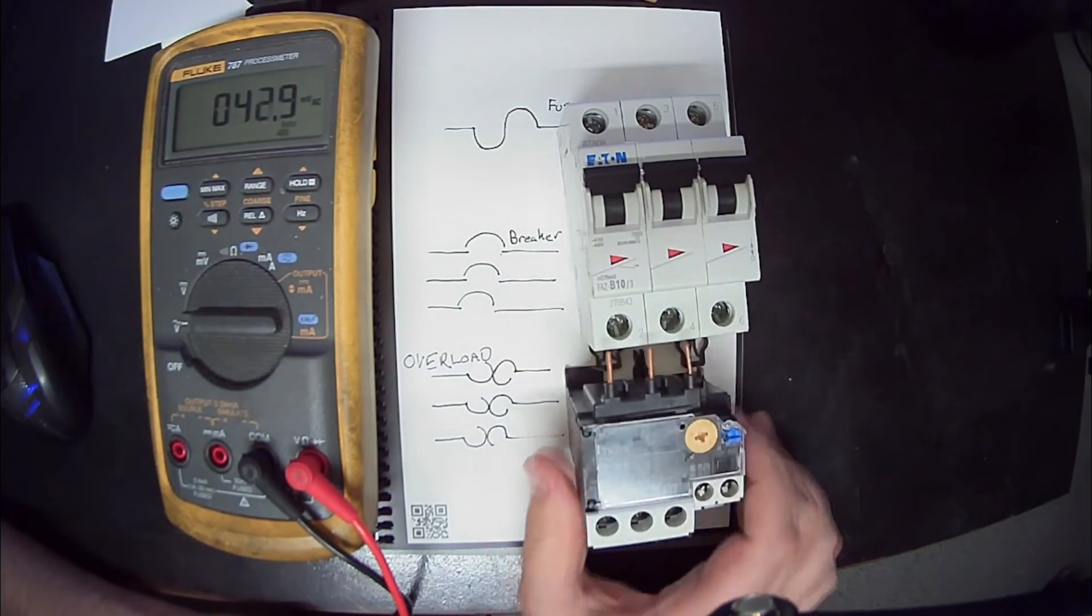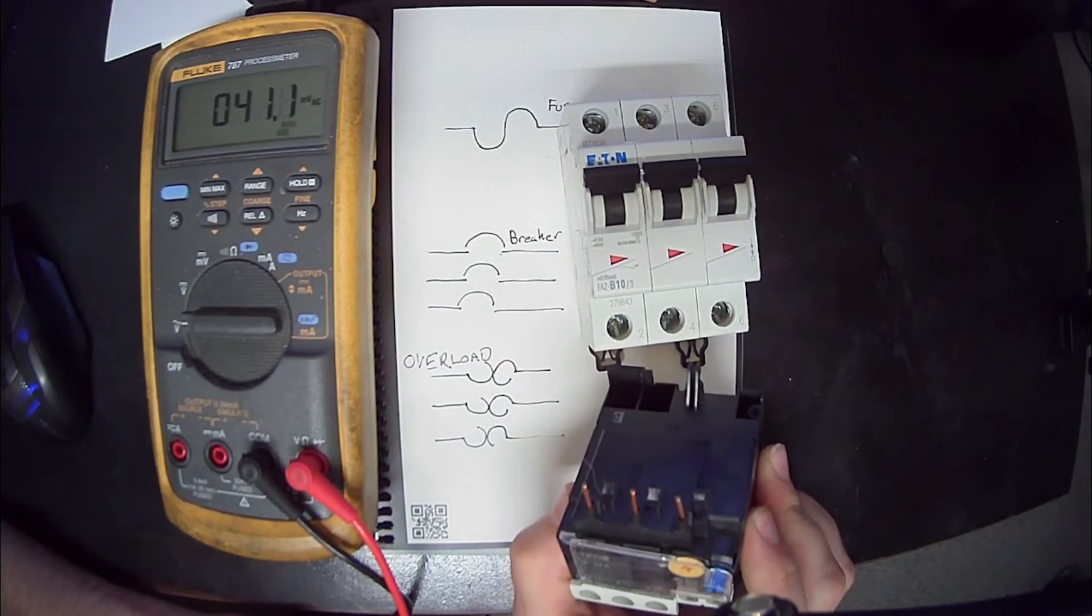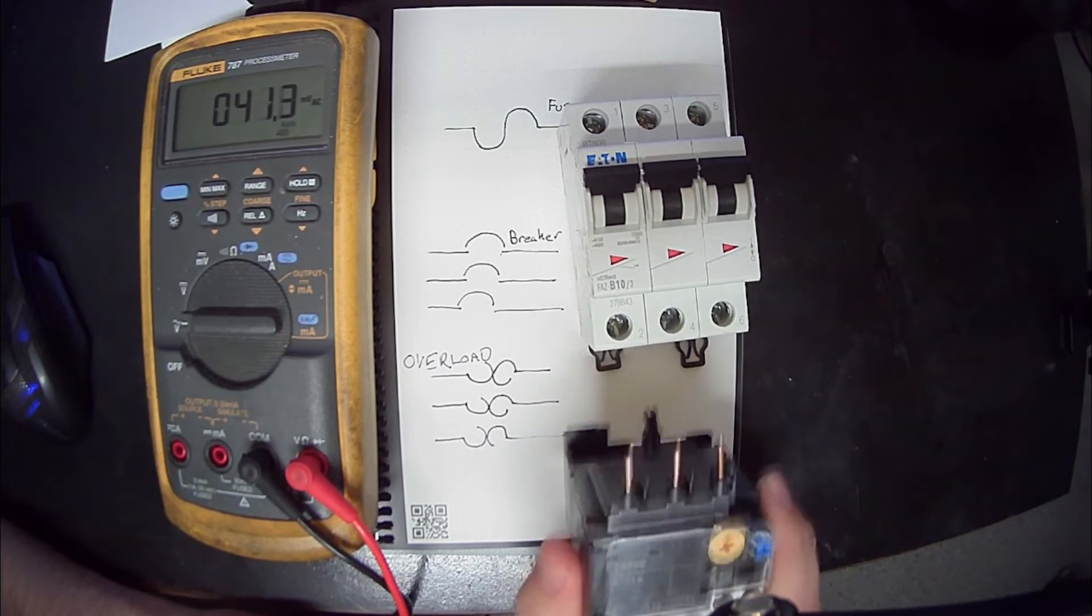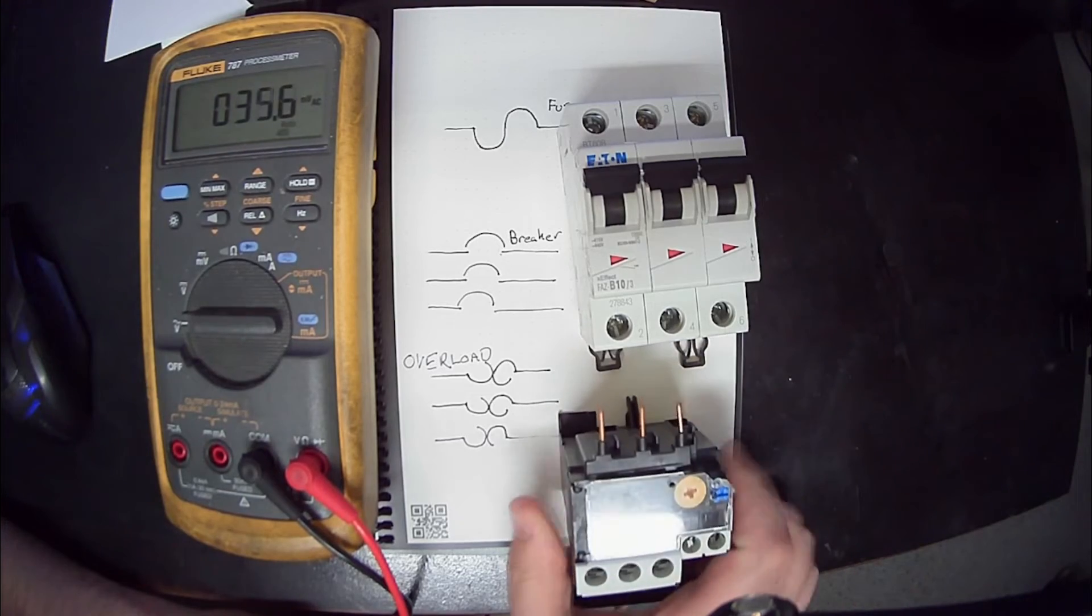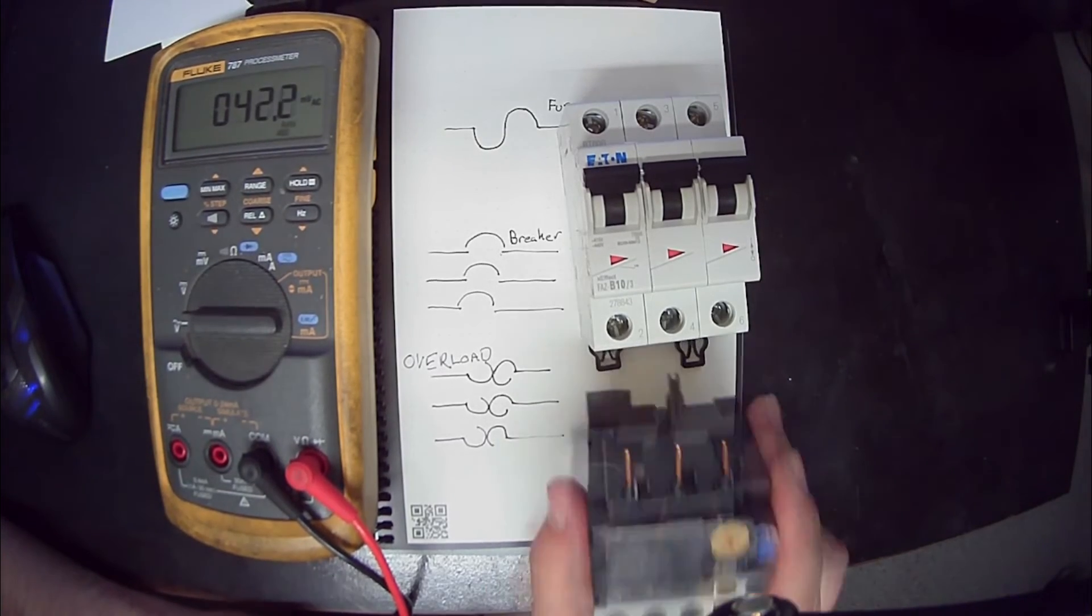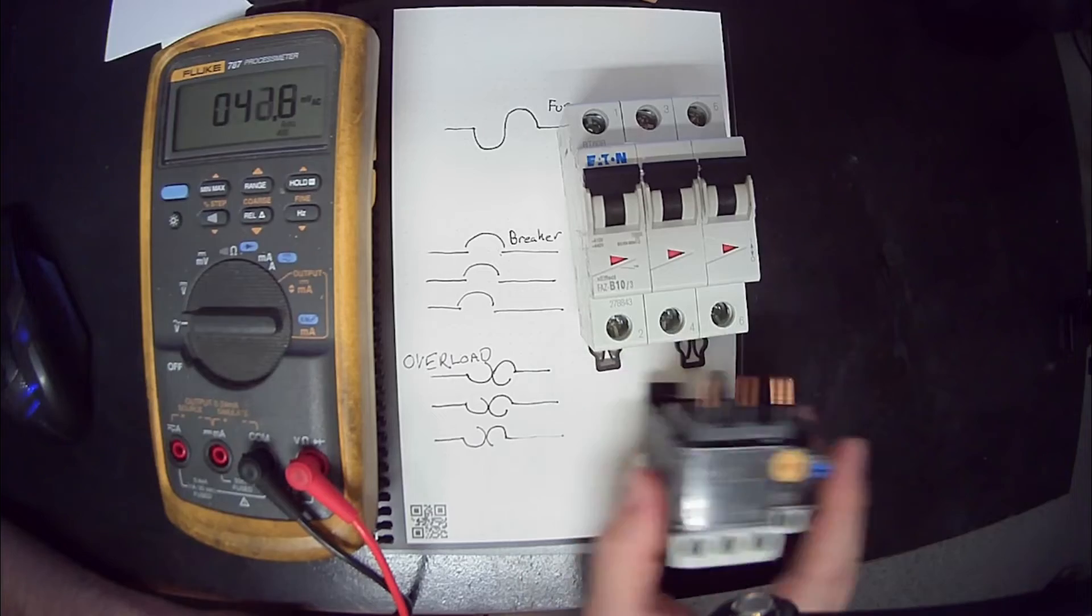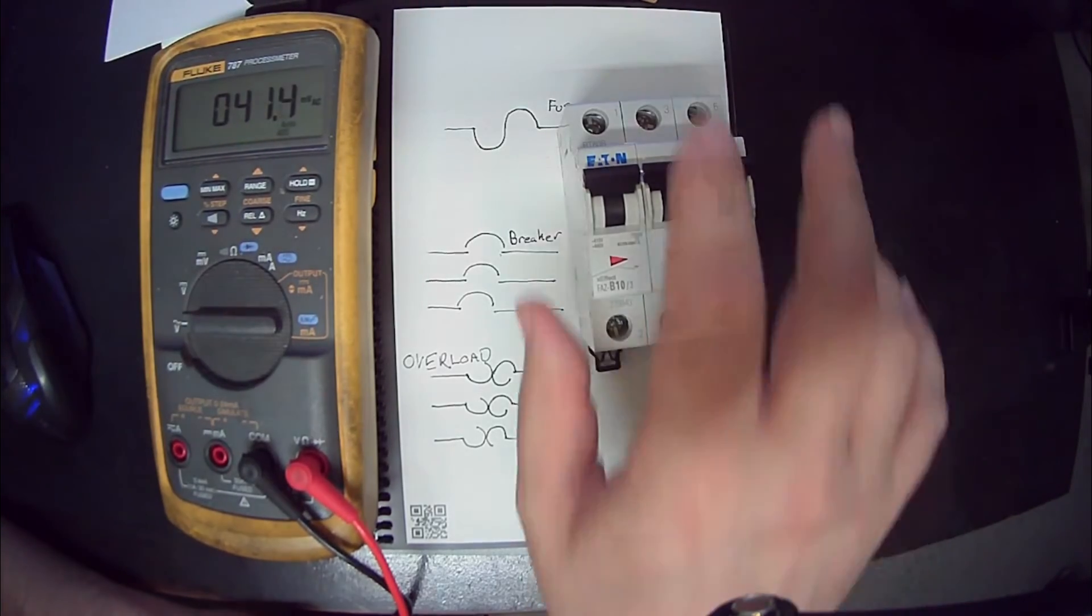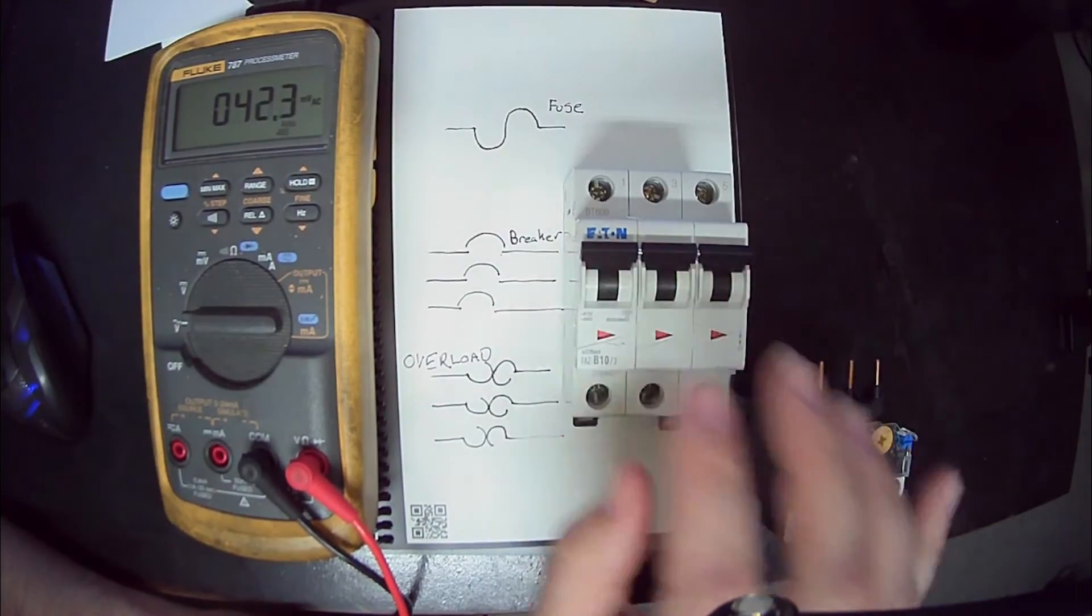It's the same thing that I do with an overload. These go bad - overloads go bad much more often than breakers do. That's actually a pretty common failure. You're going to see that relatively often if you do a lot of work with a lot of motor controls. This is going to be a common failure. Not super super common, but it's still a common failure.